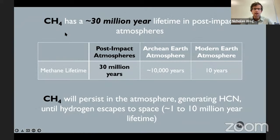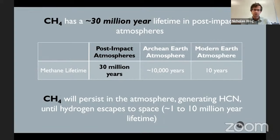In this simulation, methane has a 30 million-year lifetime — very long. For comparison, the Archean Earth atmosphere has a 10,000-year methane lifetime and the modern Earth has a 10-year lifetime. The methane lifetime is so long because these atmospheres are hydrogen-rich: when methane is split apart by ultraviolet light, it just recombines through reactions with hydrogen. This is important because methane persists in the atmosphere generating hydrogen cyanide until hydrogen escapes to space — a process taking 1 to 10 million years — so hydrogen cyanide and perhaps cyanoacetylene is being produced for this entire period.